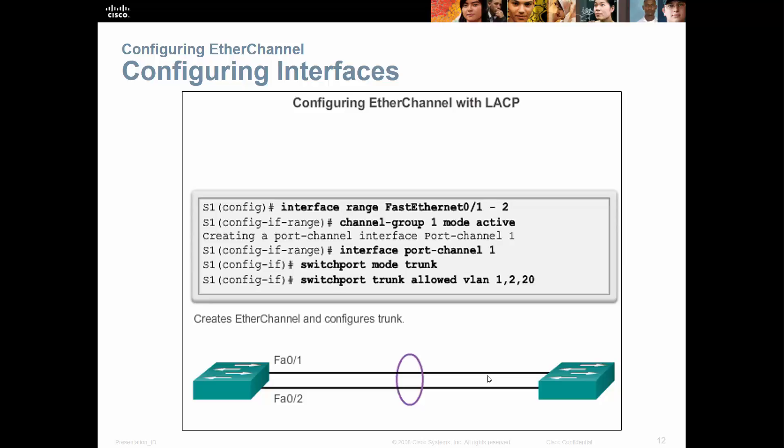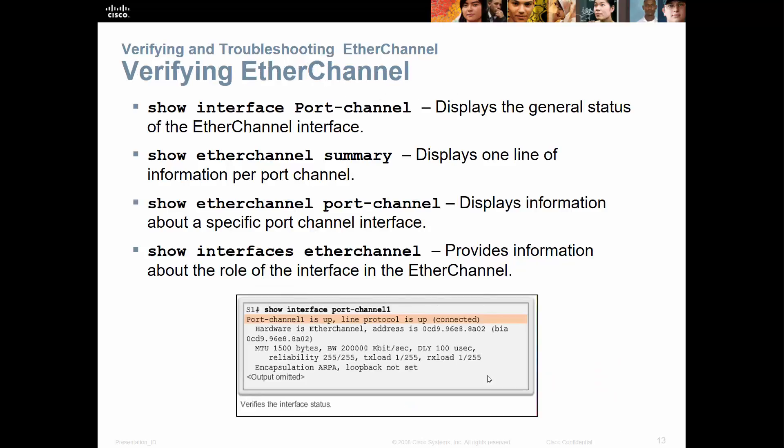In this example, we're looking at how to make them a trunk port, so we'll treat the port channel like a regular interface and issue our switchport trunk command. To verify, here are the appropriate show commands: 'show interface port-channel', 'show etherchannel summary', 'show etherchannel port-channel', and 'show interface etherchannel'. You can go through what each one does.